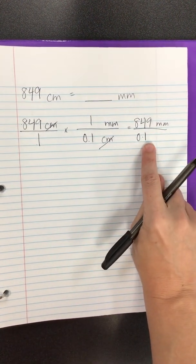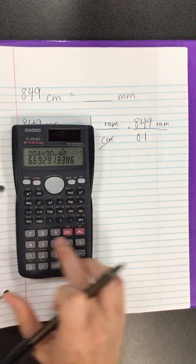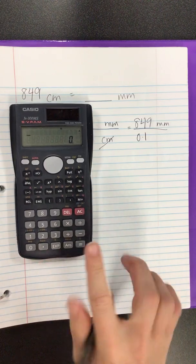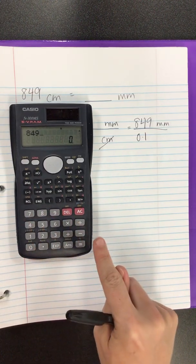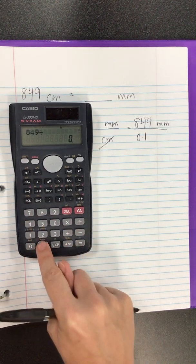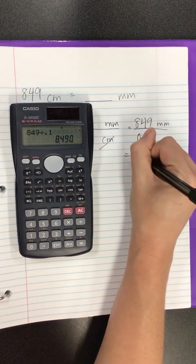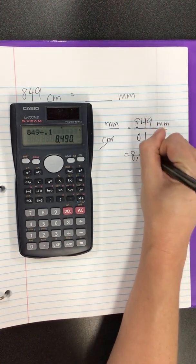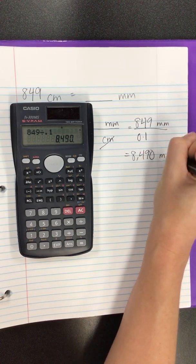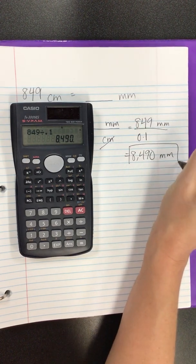Now we can't leave a decimal in the denominator. So let's clear this out. 849 divided by 0.1 equals 8,490 millimeters. And that is our final answer.